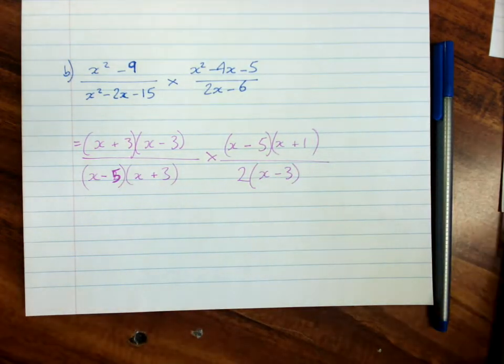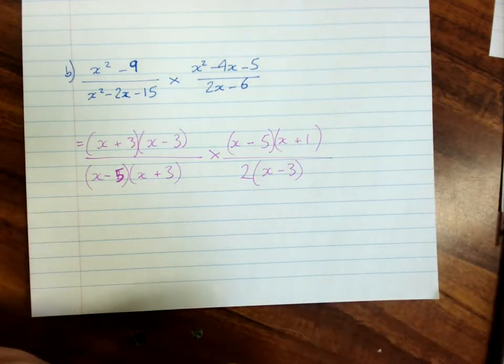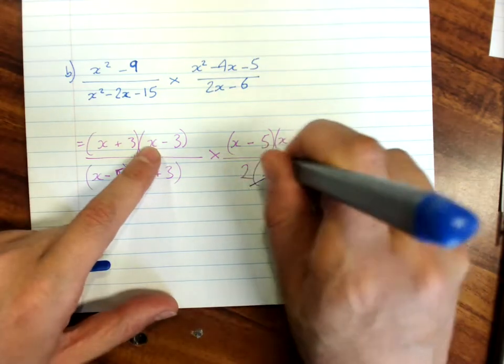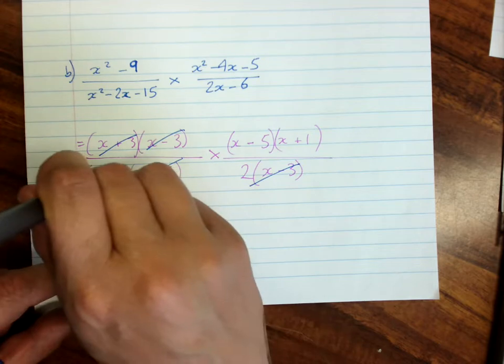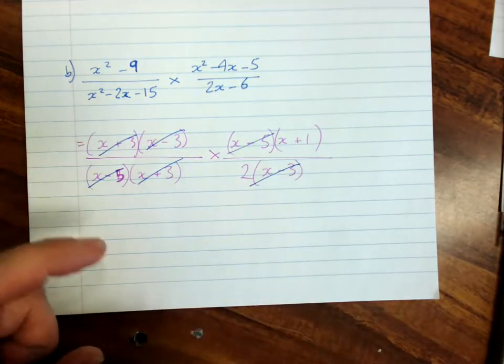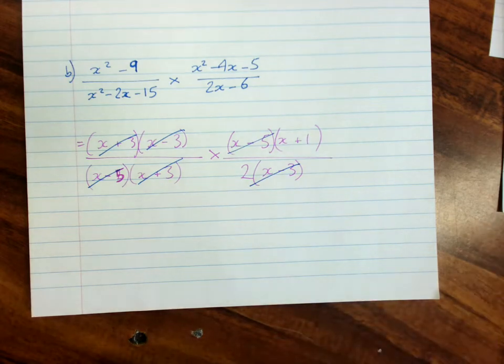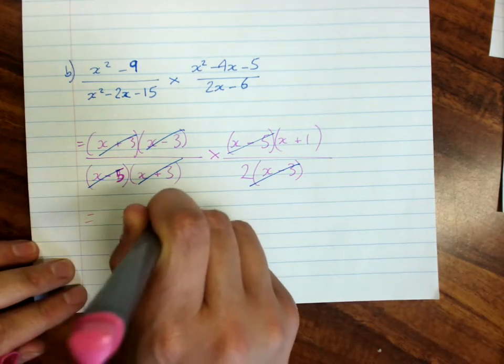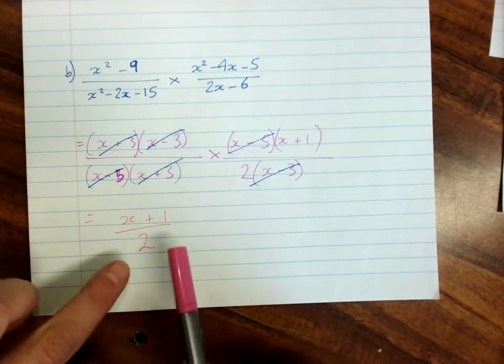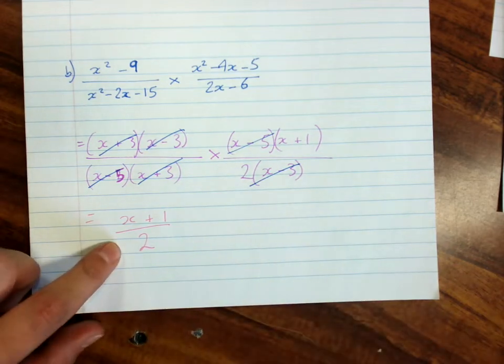And now we go looking for on top and bottom pairs that we can cancel. x minus 3, x plus 3, x minus 5. All I have left is x plus 1 on 2. When you look at all this that was happening up there it actually simplifies down quite neatly.